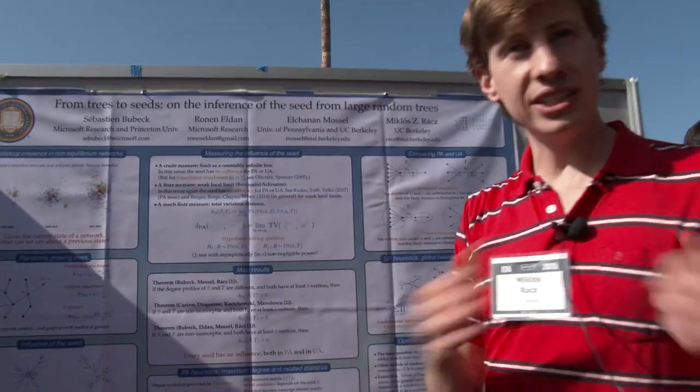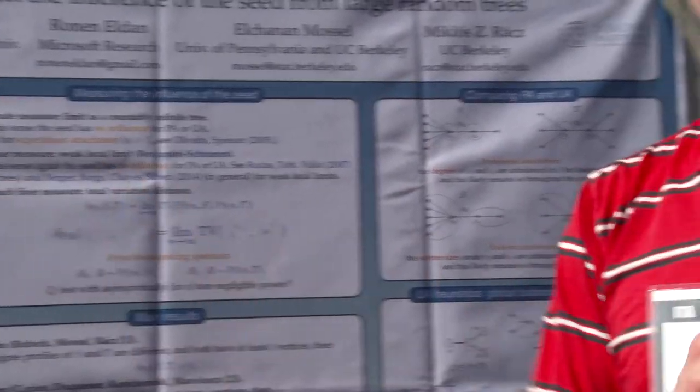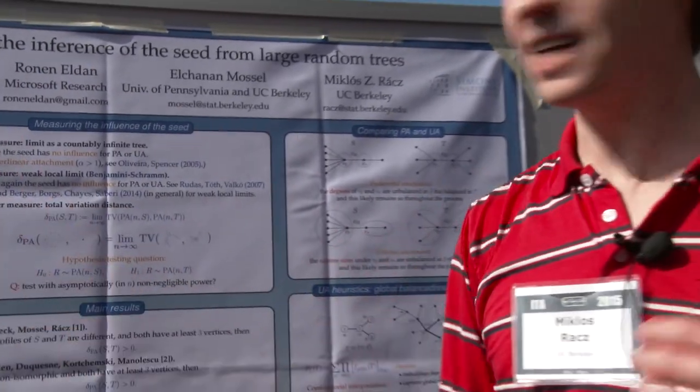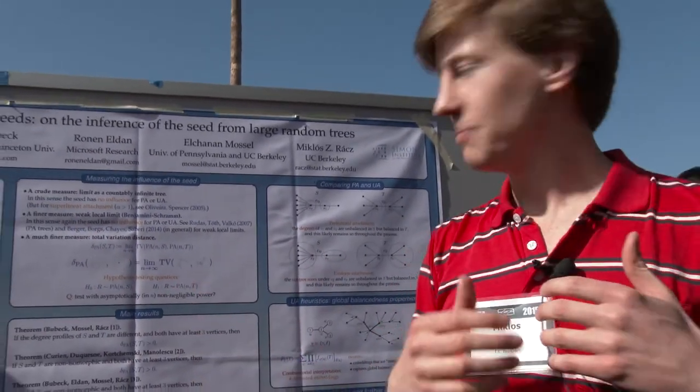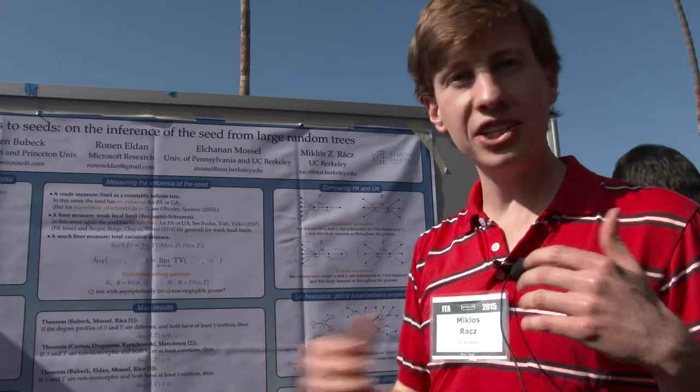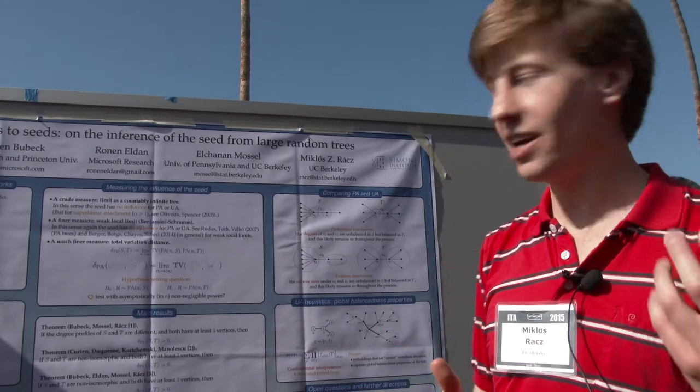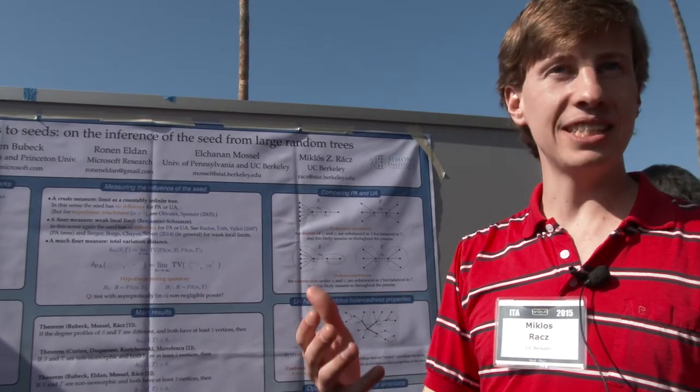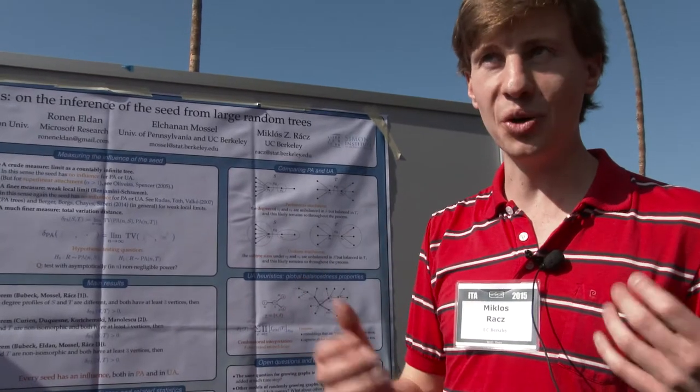So you can look at the limit of the total variation distance as the size of the tree goes to infinity. And this limit exists because this total variation distance is not increasing and not negative. And the question is, is this positive or is it zero in the limit?